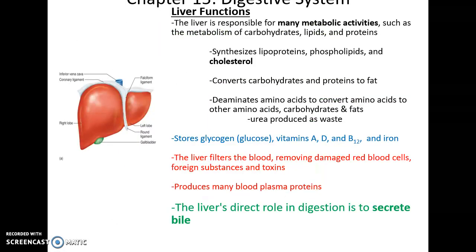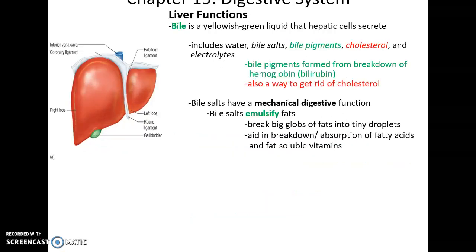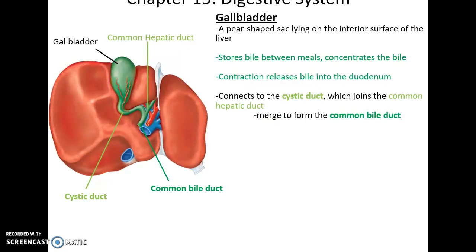The liver has many functions: it does metabolic activities, synthesizes cholesterol, converts carbohydrates and proteins to fat, stores vitamins and glucose, filters the blood, removes damaged blood cells, produces blood plasma proteins, and produces bile. Bile is a fluid containing cholesterol and bile pigments from the breakdown of hemoglobin. It helps get rid of excess cholesterol and aids in mechanical digestion by emulsifying fats — causing large fat globules to become tiny ones, making them more able to be broken down by lipases.